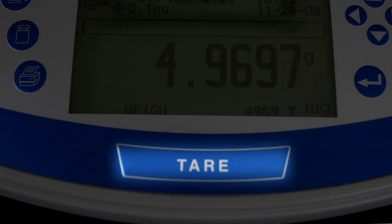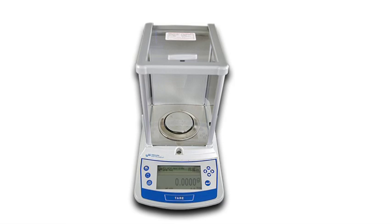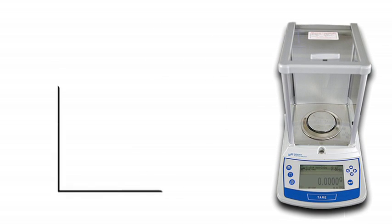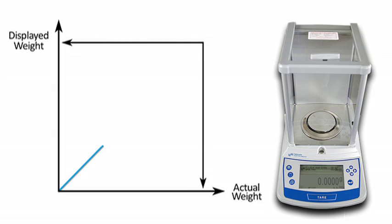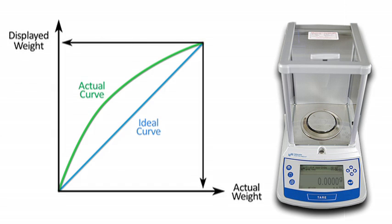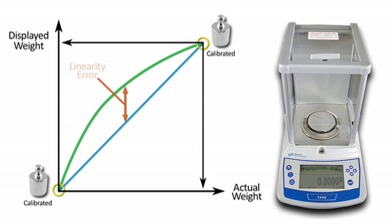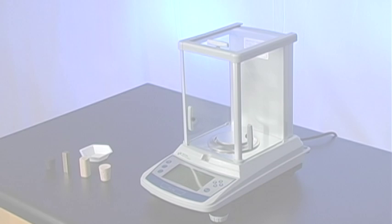In today's experiment, we will be checking the linearity of the balance by testing its response at its midpoint. Linearity error occurs when a balance is properly calibrated at the bottom and top of its range, but its weight values in the middle are not correct. If a balance has a linearity error beyond the manufacturer's specifications, then it must be professionally repaired.